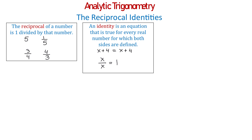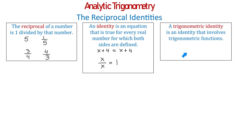Now, what about trigonometric identities? A trigonometric identity is an identity that involves trigonometric functions. An example of a trigonometric identity can be sin of x over tangent of x equals cosine of x.